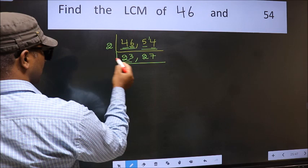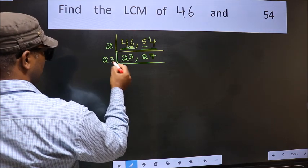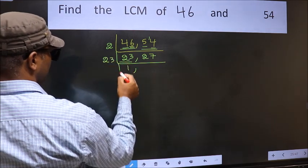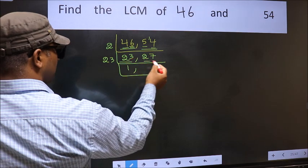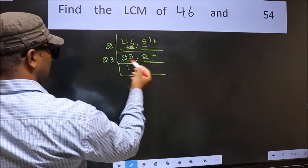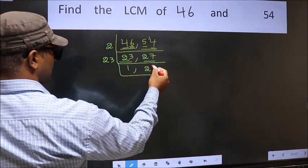Now here we have 23. 23 is a prime number, so 23 times 1 is 23. The other number 27 is not divisible by 23, so we write it down as it is.